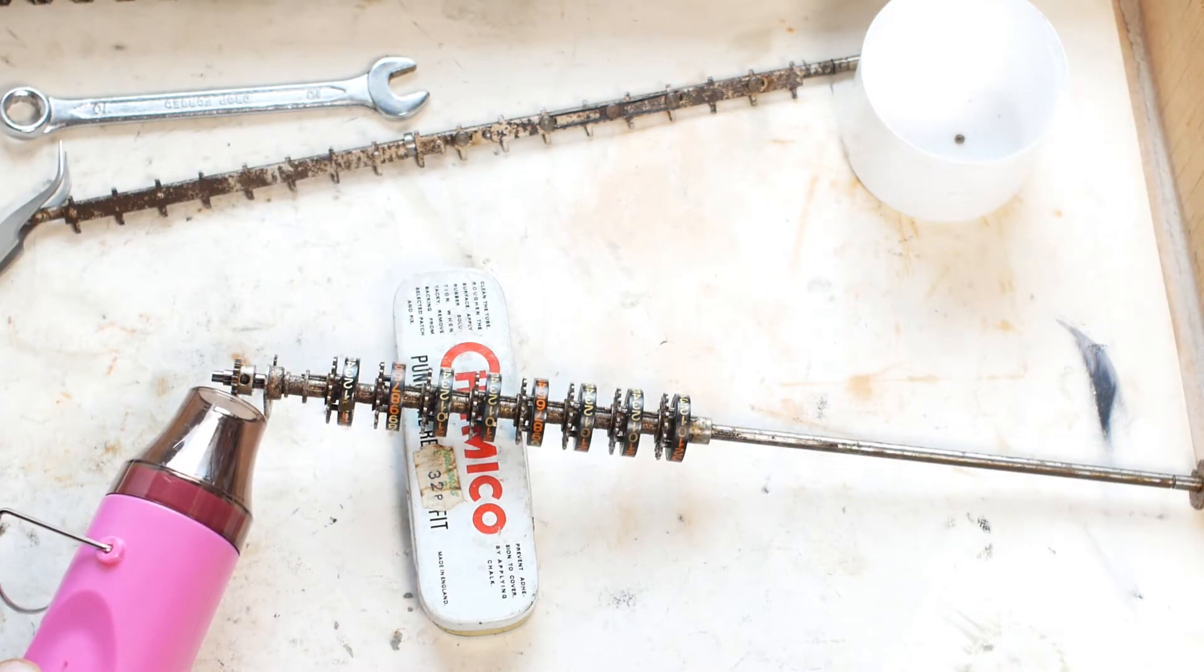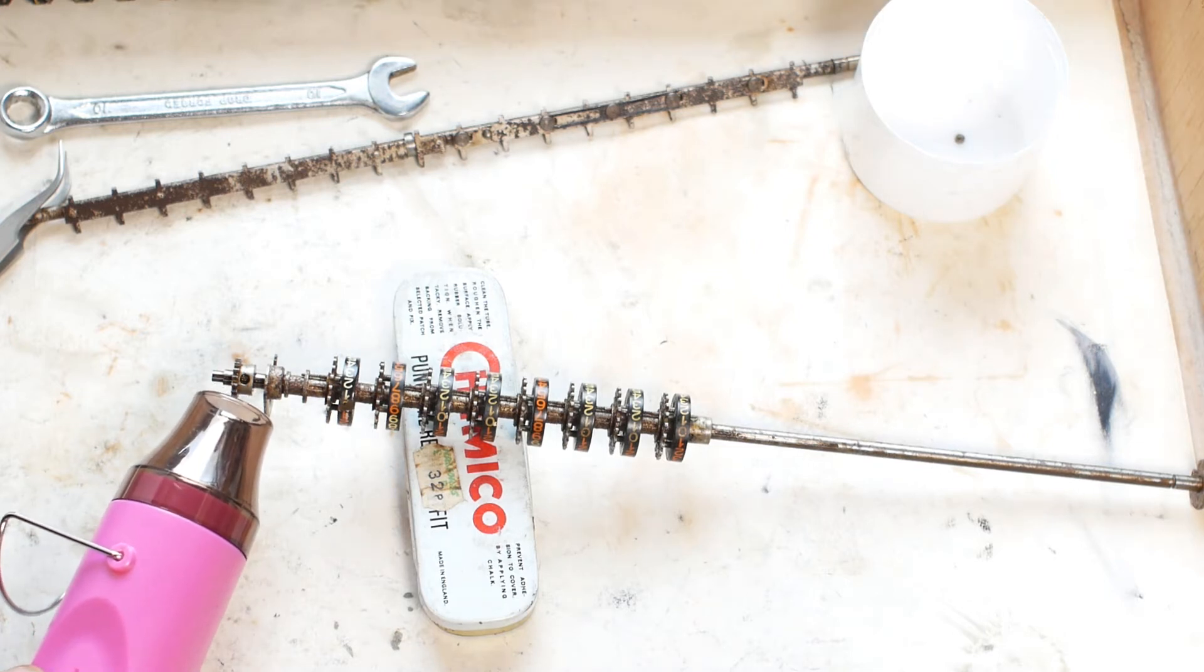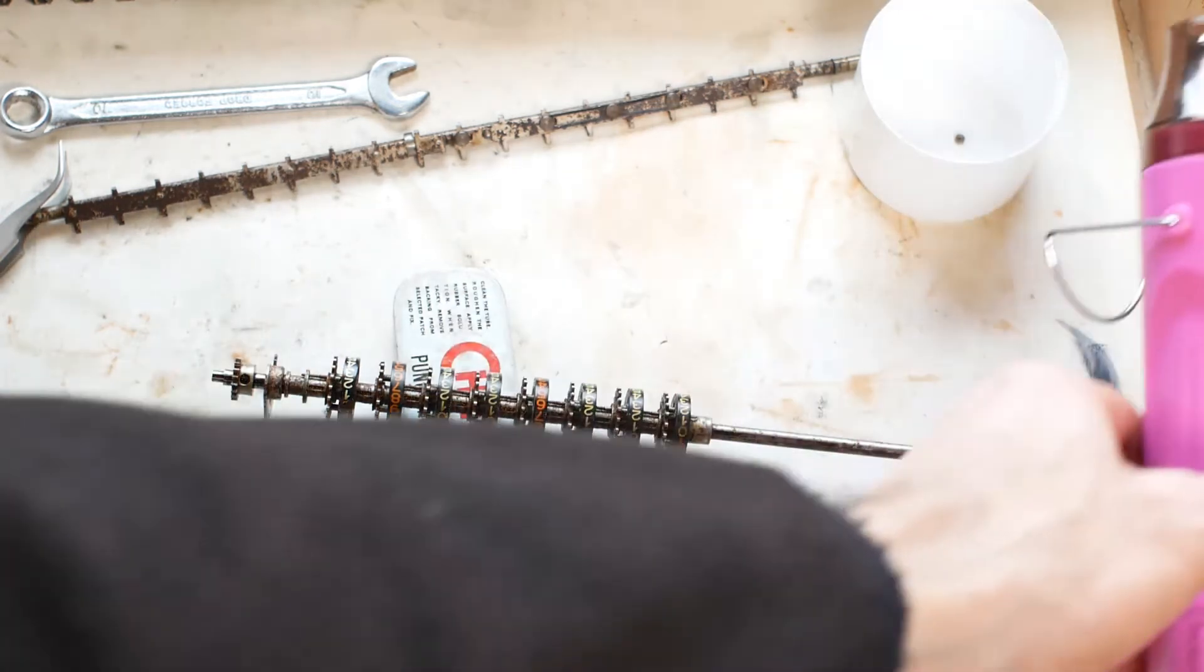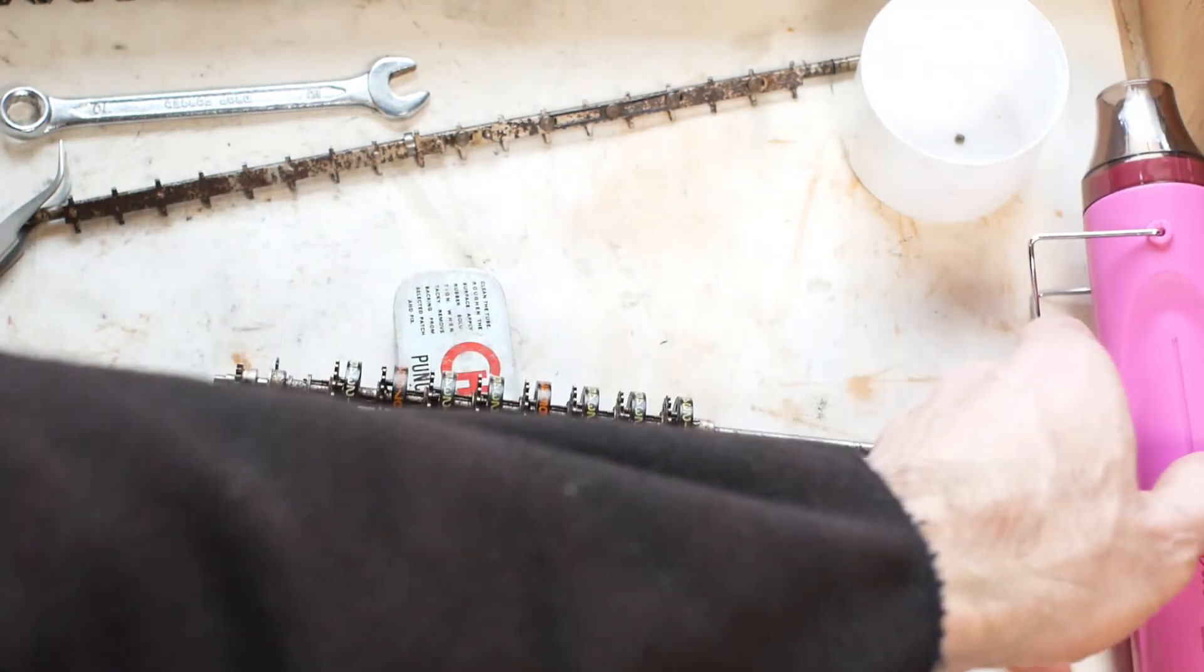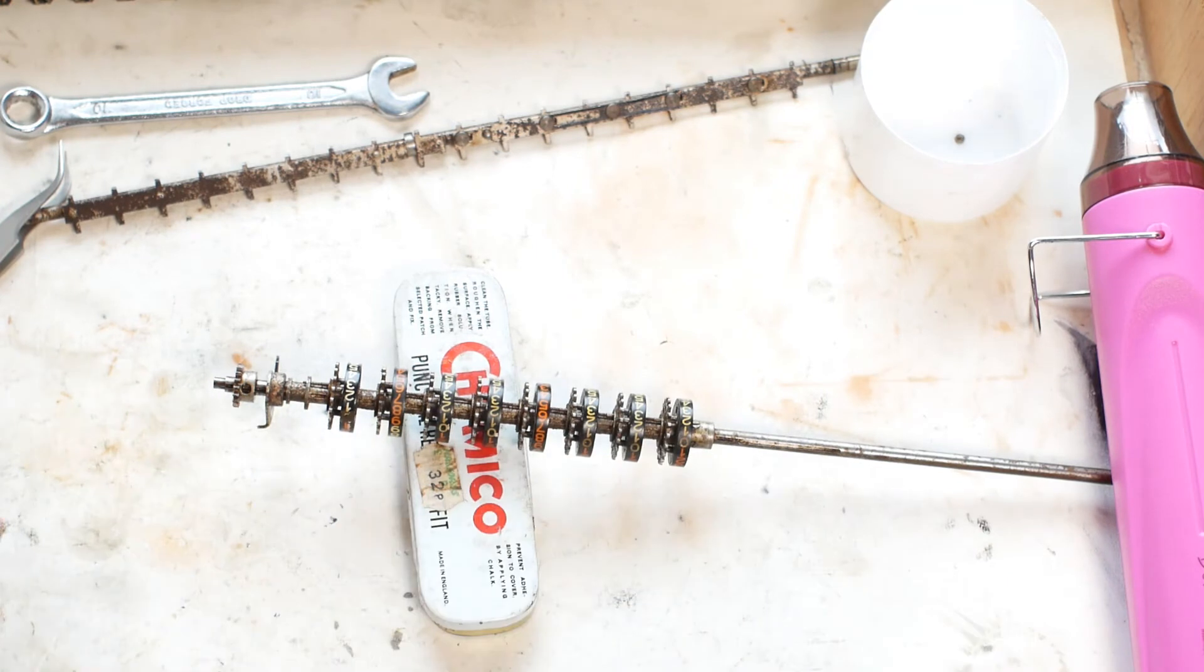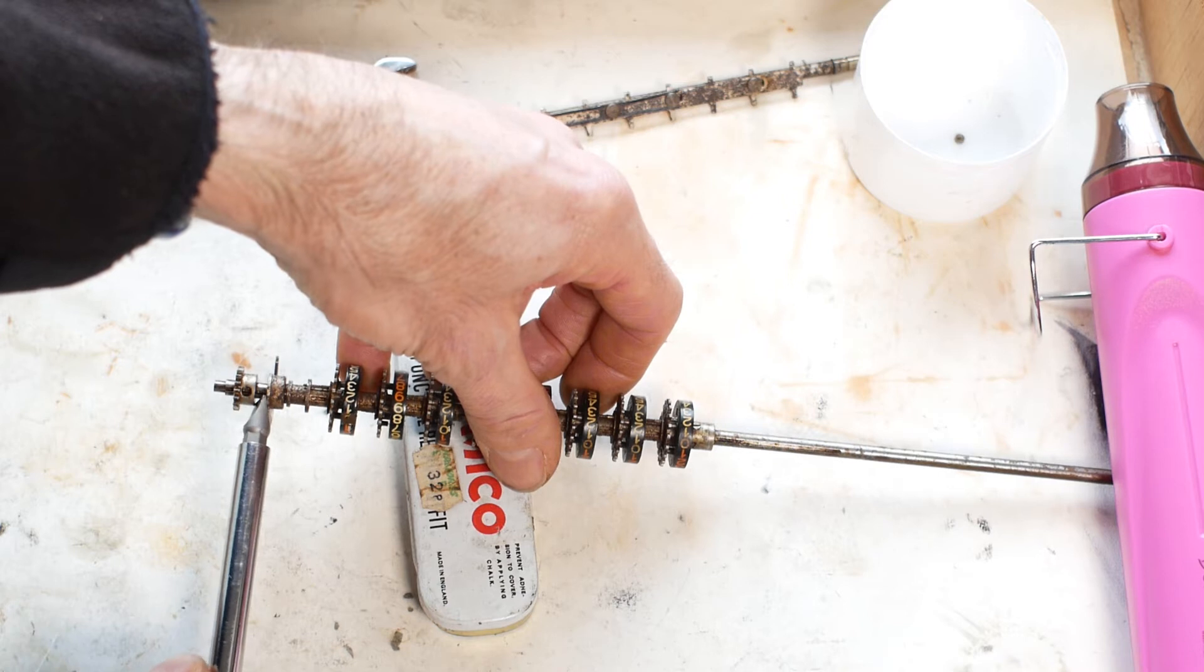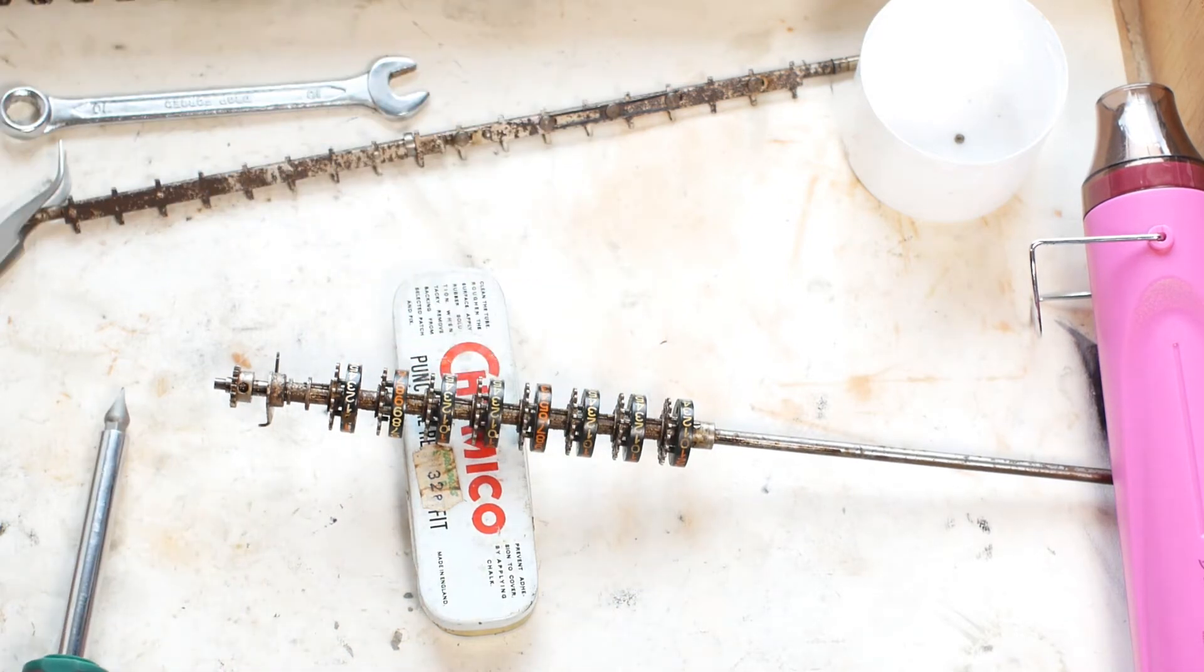That should be fairly hot by now. The heat can do two things. It can expand the metal a little, allowing it to move a bit easier. But also, one of the main things that stops these old mechanical calculators is old dried oil and grease. Heating dried oil usually softens it enough to start things moving again, thereby allowing you to introduce some fresh oil to the part or bearing surface. So I'll just see if it's free enough to come off yet. And yeah, that's moving. I'm not going to touch it with my fingers yet because it's still too hot.